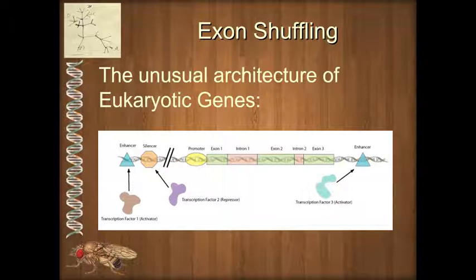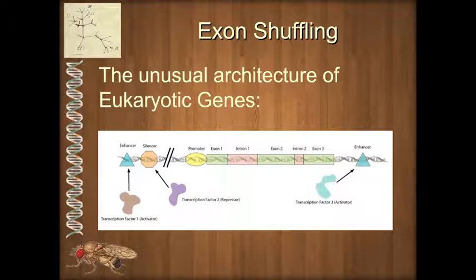We've already talked about this: in the human genome, and the pattern remains for all eukaryotes, only about 1.5% of the entire genome is protein-coding. The rest is non-coding DNA, and a large portion of that does not have a really immediate big impact on the phenotype of the organism.